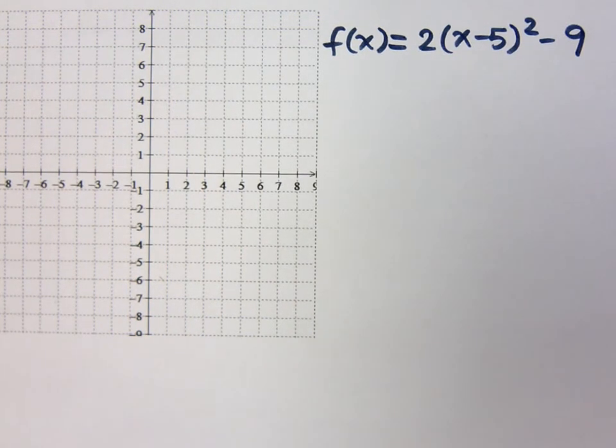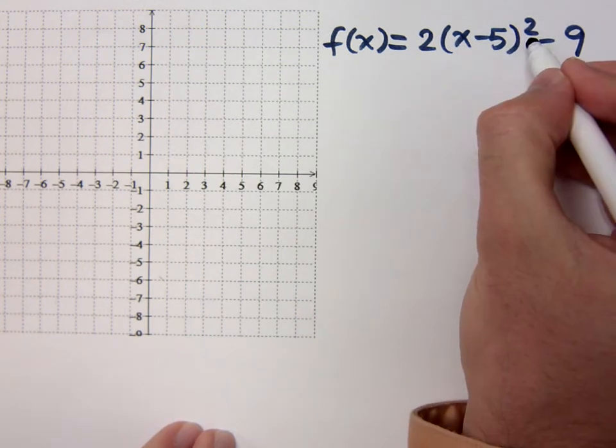Let's graph this guy. Notice that he's already set up in a perfect form for you. This is just like the guys we did the other day. We know that this is a parabola. Of course, we're talking about quadratic functions, so quadratic functions are parabolic. The square tells you it's a parabola.